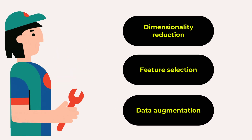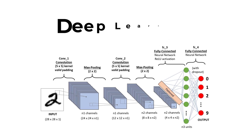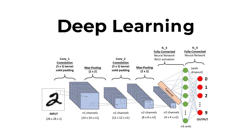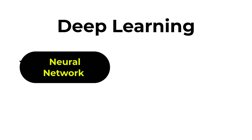Another skill you need to learn is deep learning for computer vision. Deep learning is a deep neural network that allows you to analyze big data. You should learn neural network basics such as architectural design, loss functions, and optimization algorithms.